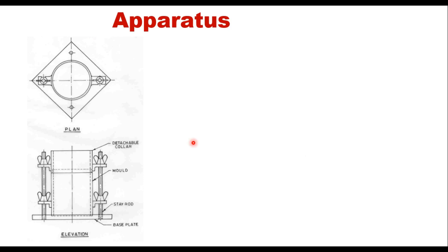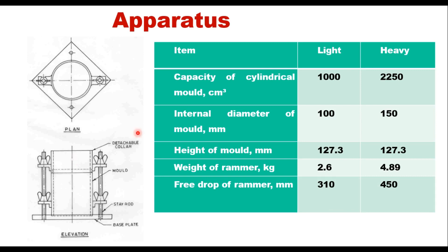The apparatus includes a mold with a base plate, a standard or modified mold, and a detachable collar. The capacity of the cylinder is 1000 cm³ for light compaction and 2250 cm³ for heavy compaction. Internal diameter is 100 or 150 mm and the height of the mold remains the same at 127.3 mm. The weight of the hammer and free drop of the rammer differ: 310 mm for light compaction and 450 mm for heavy compaction.